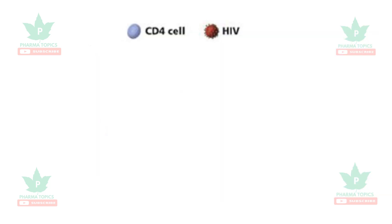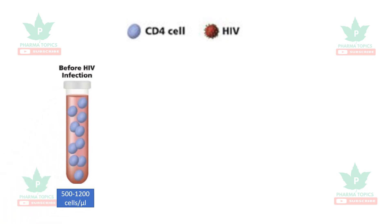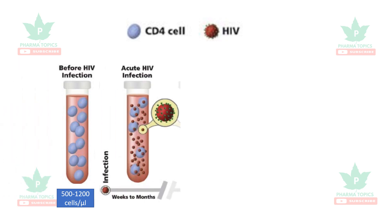In HIV, two things are very important: CD4 cells and the viral load or viral titer of HIV. Before HIV infection, the CD4 cell count is around 500 to 1200 cells per microliter. When HIV infects — in the case of acute infection — the HIV titer increases, but the CD4 cells are not affected much in the earlier stages.